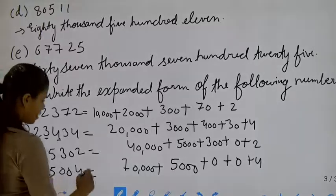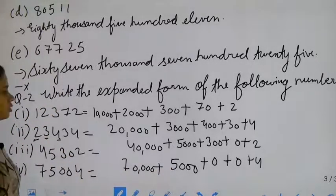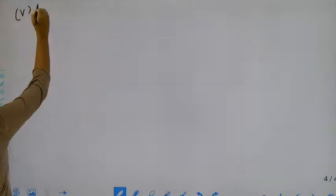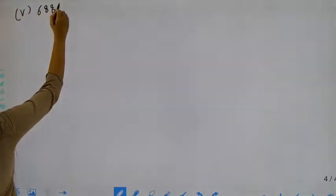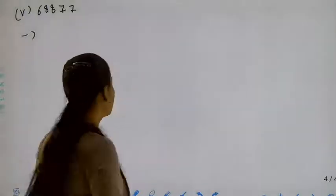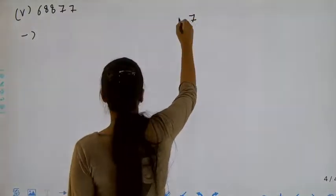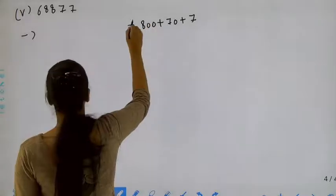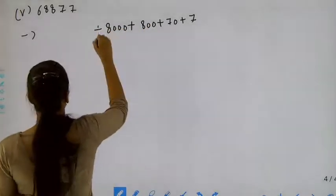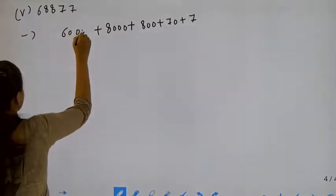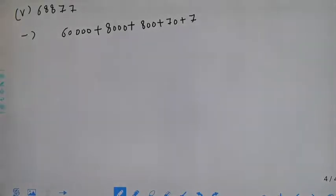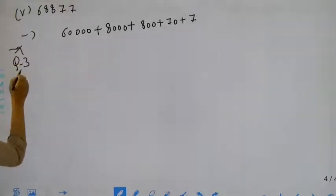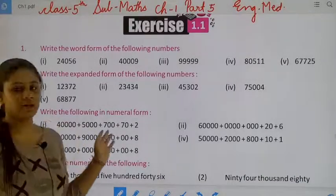Don't be confused. Now move to the next part, that is the last part: sixty-eight thousand, eight hundred, seventy-seven. Again, we will start from the right-hand side — ones, tens, hundred, thousand, and then ten thousand. Now, if you want to write in your notebook you can, then leave one line and write the third question: write the following in the numeral form.